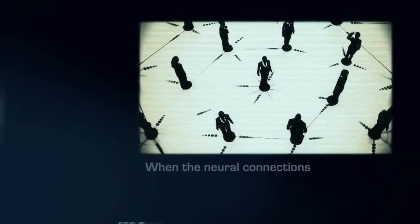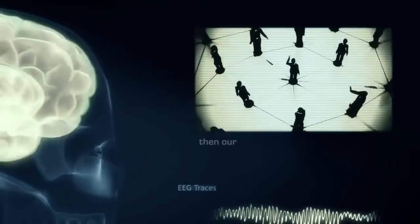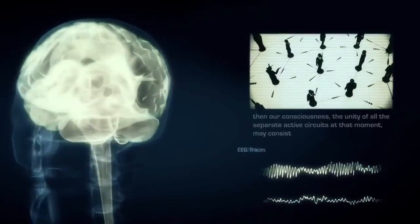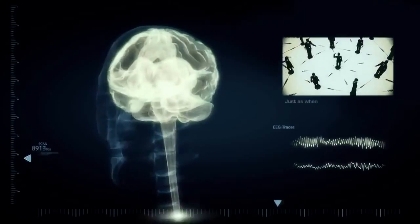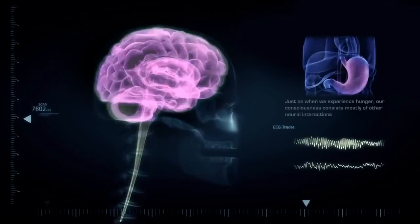When the neural connections that physically define our belief system are not strongly developed or active, then our consciousness, the unity of all the separate active circuits at that moment, may consist mainly of activity related to our mirror neurons. Just as when we experience hunger, our consciousness consists mostly of other neural interactions for consuming food.